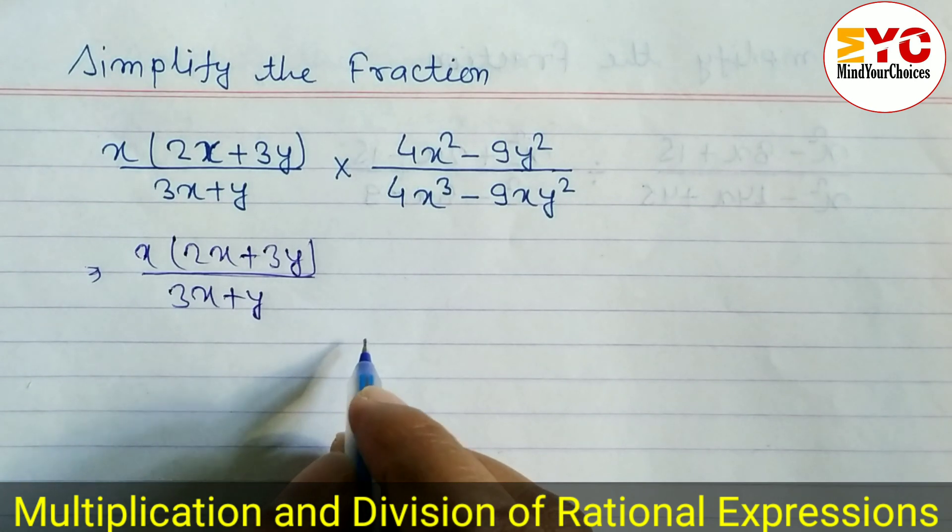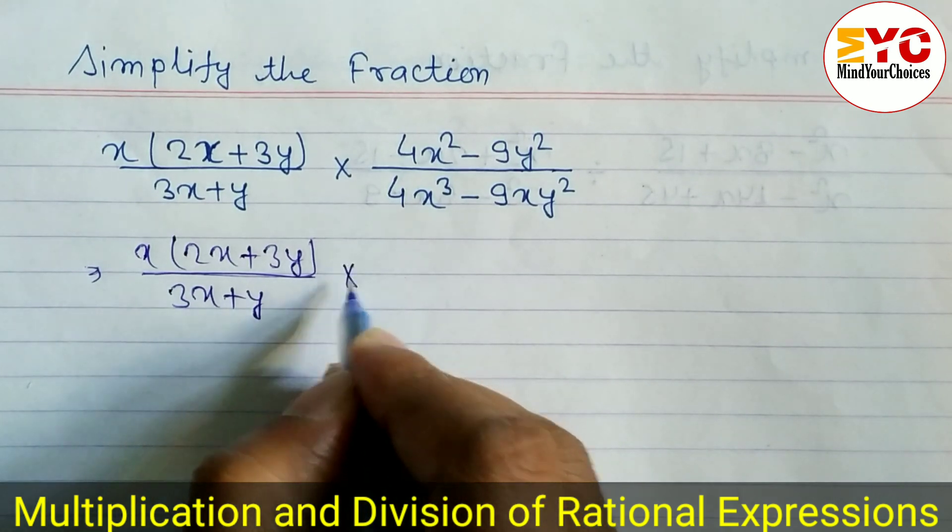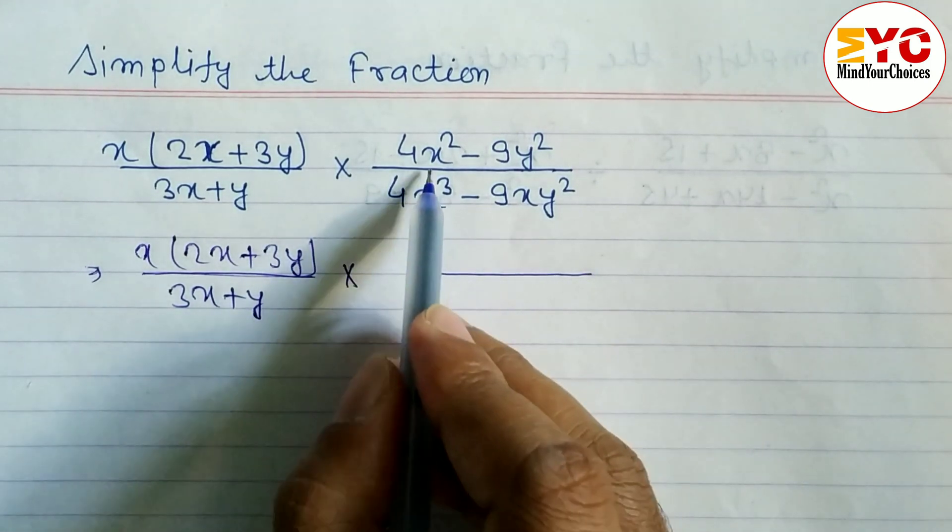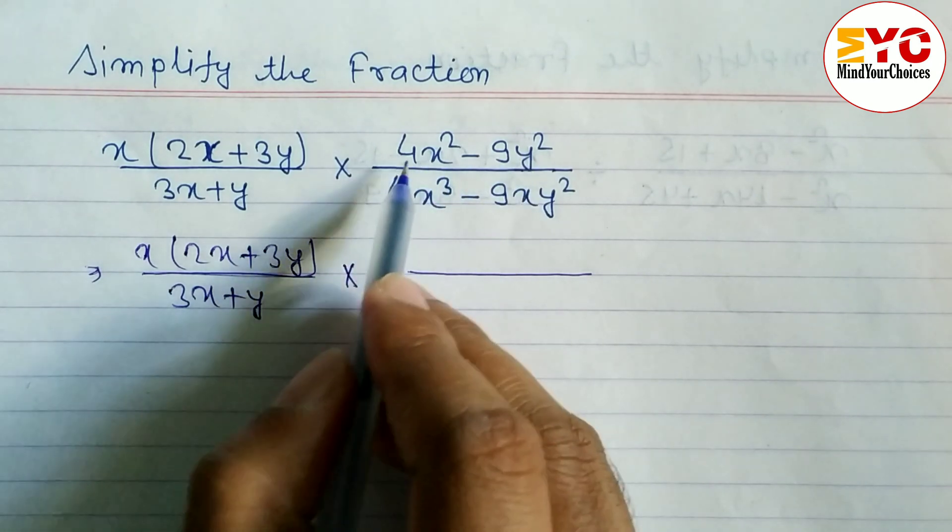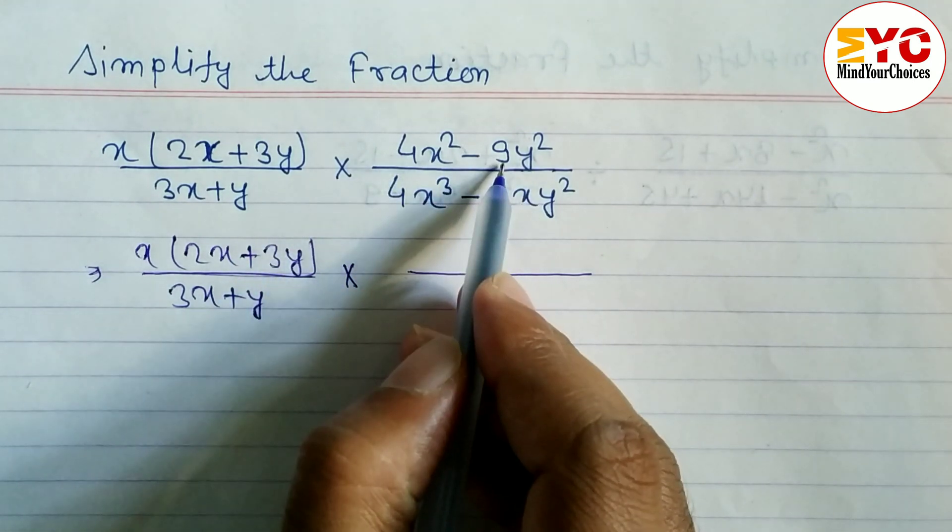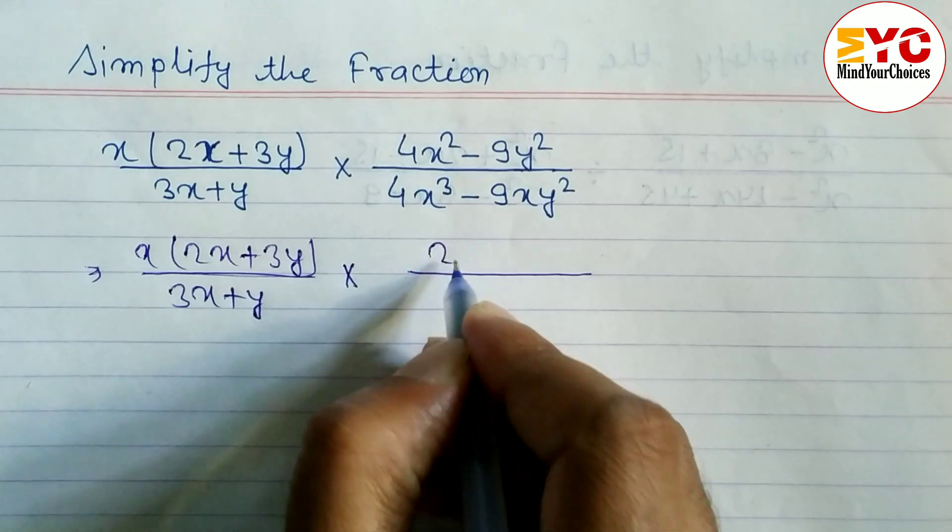And here we have to convert in the form of a squared minus b squared. Square root of 4 means 2, and square root of 9 means 3. So we can write here 2x whole squared minus 3y whole squared.